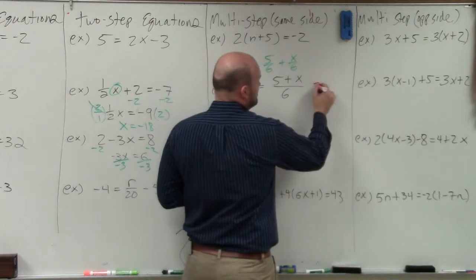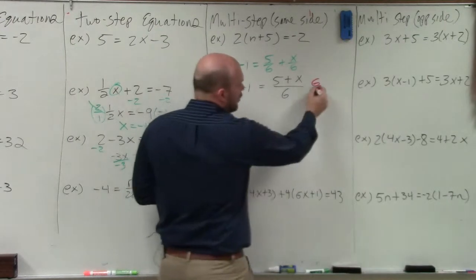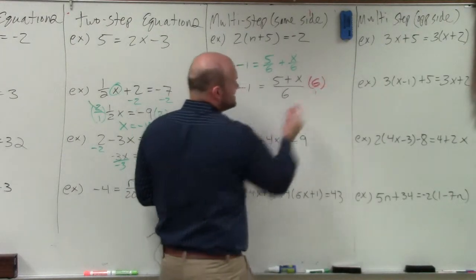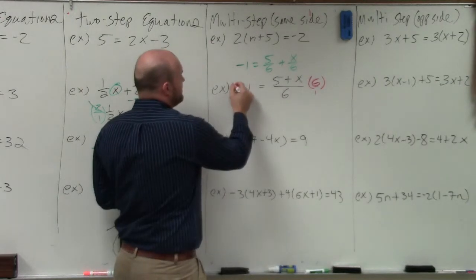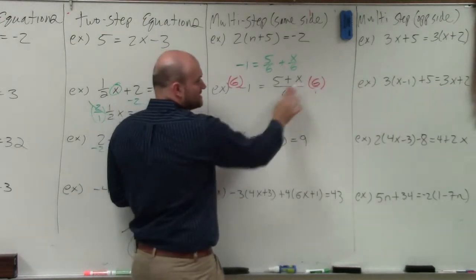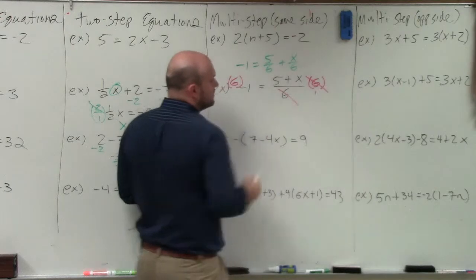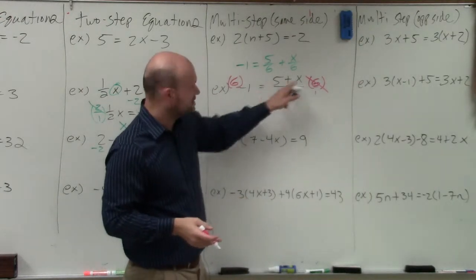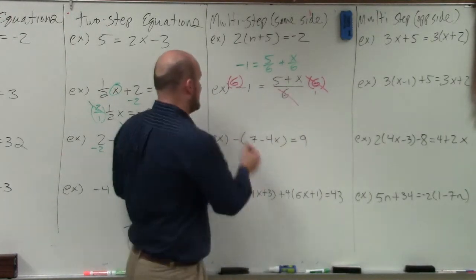So you could just multiply by 6 over 1 or just multiply it by 6 on the right side and then multiply by 6 on the left side. Because 6 divided by 6 divides to 1, which is just going to leave you with the quantity 5 plus x.